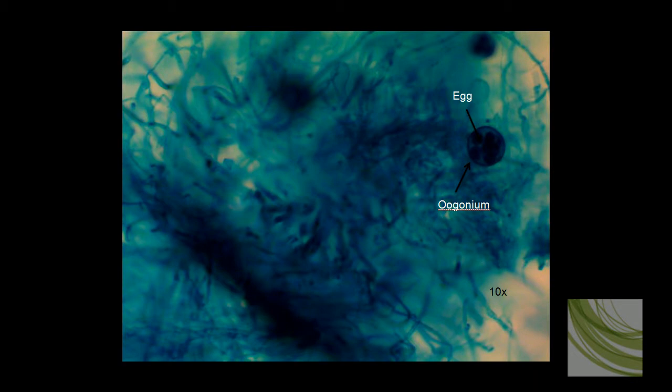Saprolegnia reproduces both sexually and asexually. In this slide, we can see as we've zoomed in using the 10X objective, an oogonium with eggs inside of it. It's very hard at this point to see the zoosporangium. They're not differentiated from the mycelium in this species.